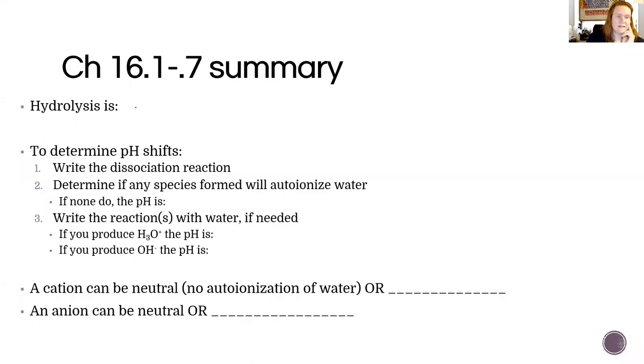Hydrolysis is when you have an ion that reacts with water. Our process to determine how salts are going to influence our pH is to first dissociate it - when you write a reaction that goes completely in one direction, it's an ionization typically - and then look at what will react with water. If nothing does, the pH will be neutral.